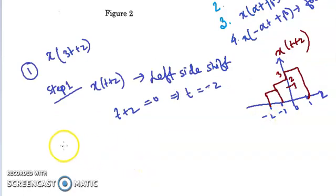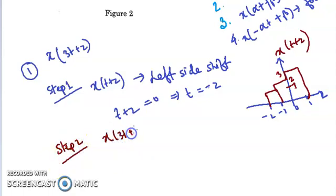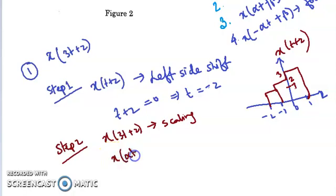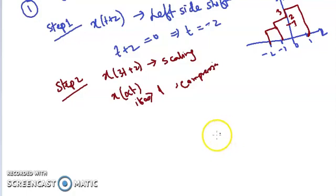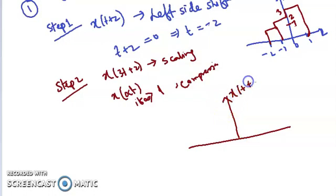For step 2, to find X(3T+2), this involves a scaling operation. Scaling with α greater than 1 means compression — the signal length will be reduced. So X(T+2) is plotted as shown.